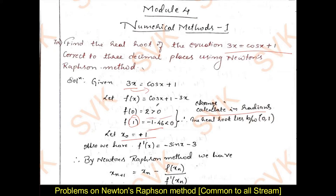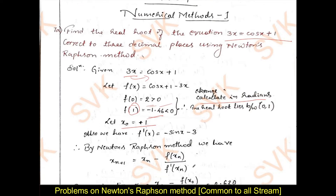For Newton-Raphson method, I have the formula: x(n+1) equal to x(n) minus f of x(n) divided by f dash of x(n). I know what x(n) is and what f of x(n) is. I need to find out f dash of x(n). For that, I will find the derivative of the given function: derivative of cos x is minus sin x, plus derivative of 1 is 0, minus derivative of 3x is minus 3. That is f dash of x.